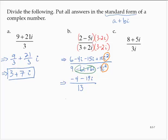Now, as with the previous exercise, this is not the standard form. So I would rewrite it in standard form as negative 4 thirteenths minus 19 thirteenths i.